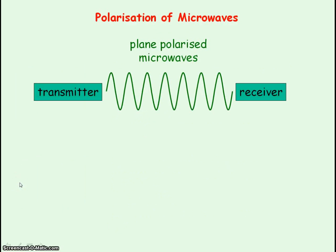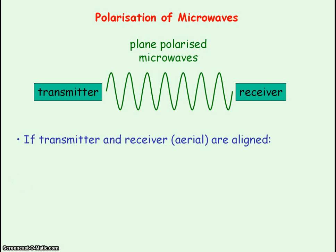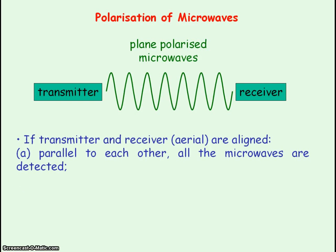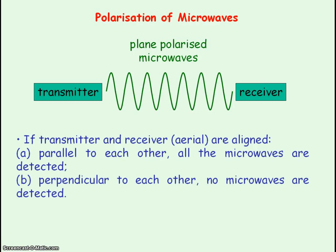Microwaves and radio waves are plane polarised from the transmitter, so it's important to orientate your receiver aerial to pick up maximum signal. If the transmitter and receiver are aligned parallel to each other, all the microwaves and radio waves will be detected. However, if they are aligned perpendicular to each other, no microwaves or radio waves will be detected.